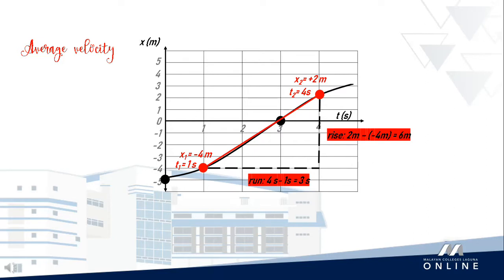Now that we have both values for rise and run, we can substitute these in our formula: 6 meters over 3 seconds, which is equal to 2 meters per second. This is how fast the armadillo runs in the given position-time interval.